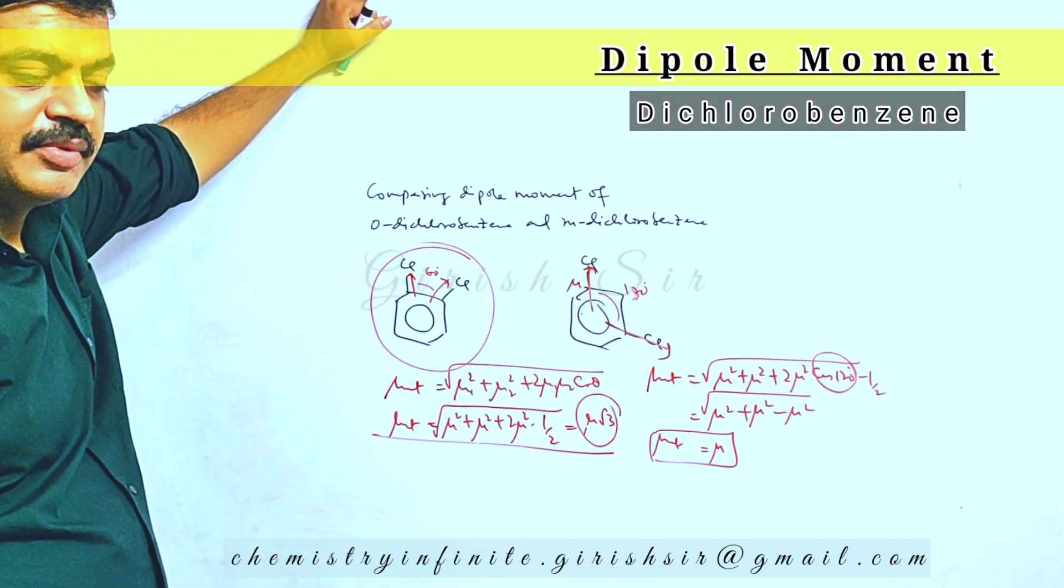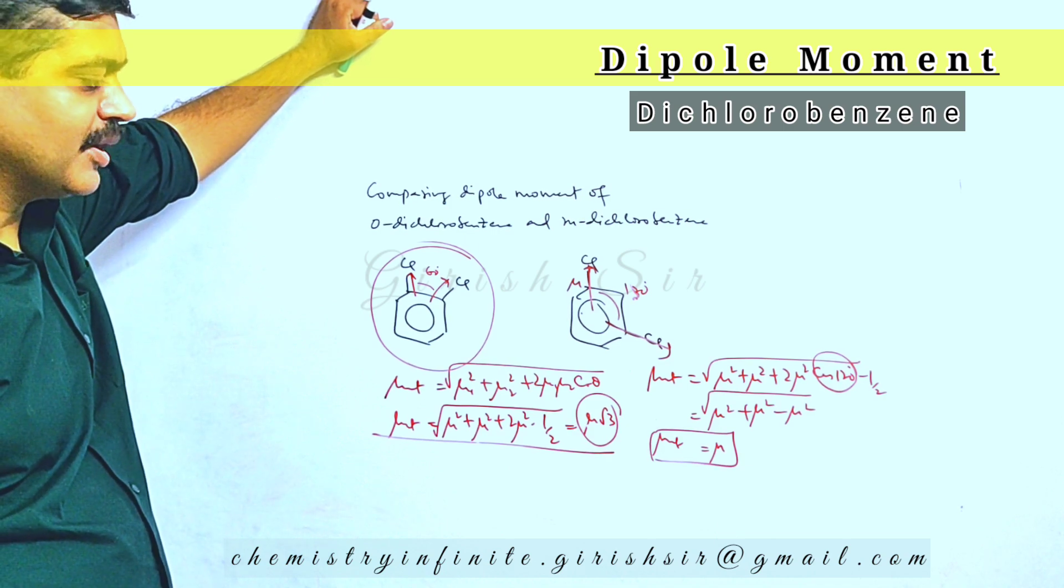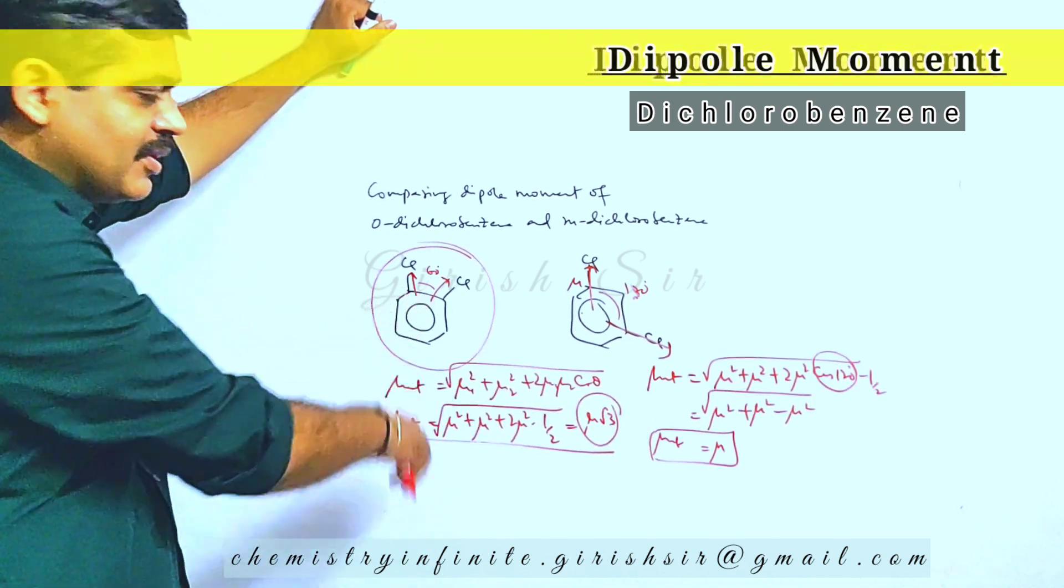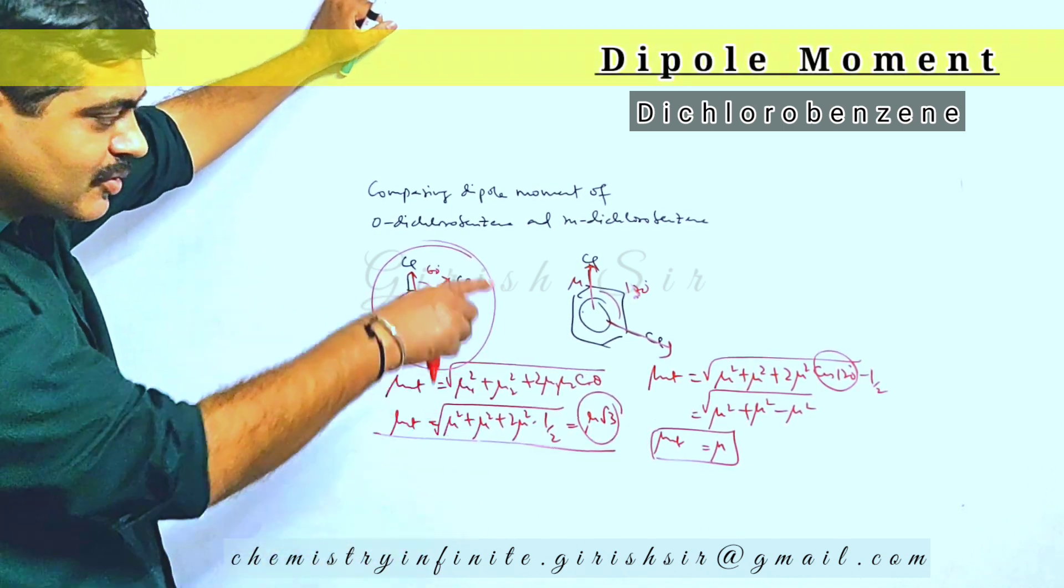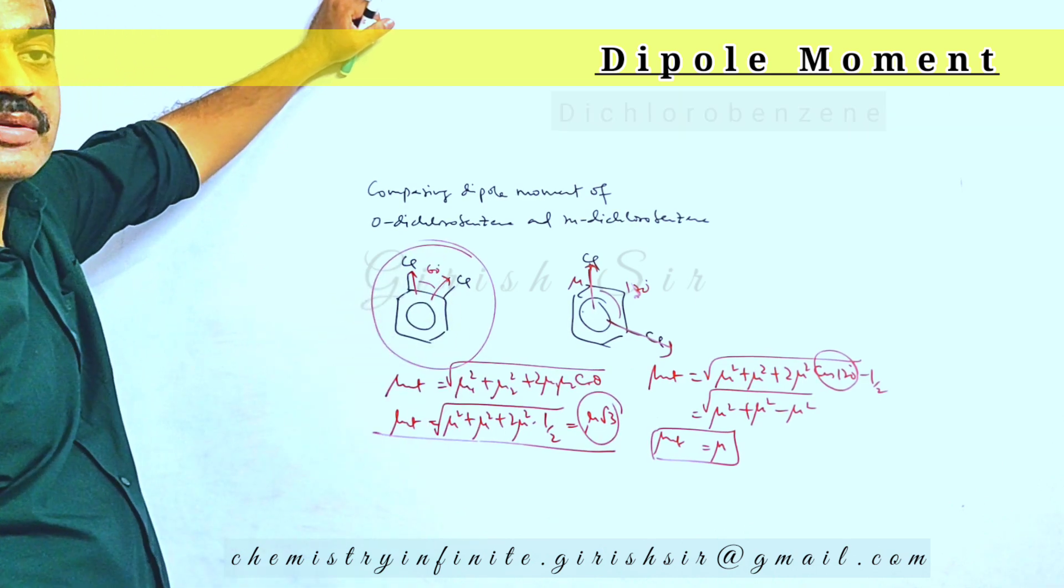So we can see this compound is having a higher dipole moment. So ortho-dichlorobenzene has a higher dipole moment net value compared to meta-dichlorobenzene because this angle is acute over here, which makes cos theta positive, and the angle is obtuse over there, which makes cos theta term negative.